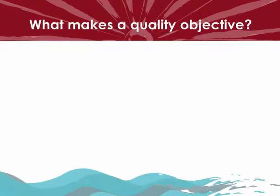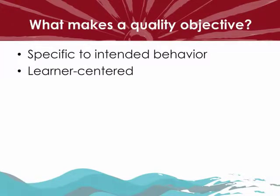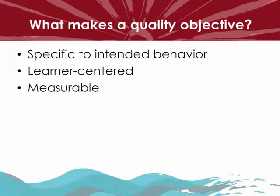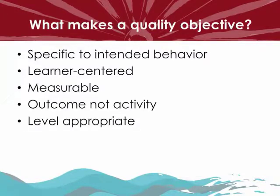So what makes a quality objective? First, objectives should be specific to the intended behavior you'd like for your students — what do you want your students to know and do as a result of the instruction? Objectives should also be learner-centered, ensuring the action is related to what the students do, not what you as the instructor do. A quality objective is also measurable, meaning how it is accomplished and to what degree are stated. Additionally, a quality objective focuses on an outcome, not an activity — it should include language about what will happen, not the learning activity used to help that happen.